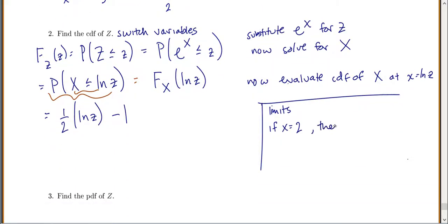If x is 2, then z equals e to the x, which equals e to the 2. And if x equals 4, then z equals e to the x, or e to the 4.